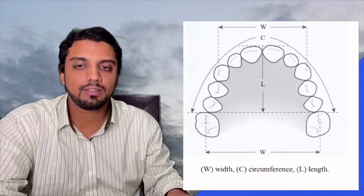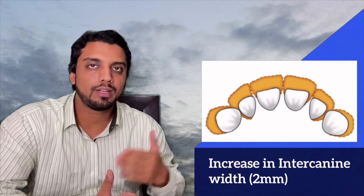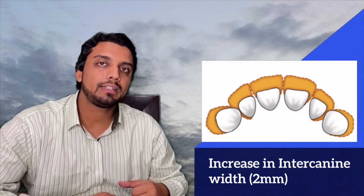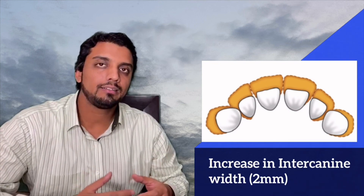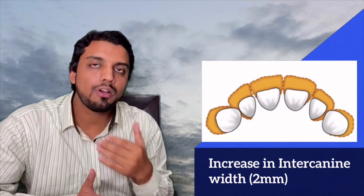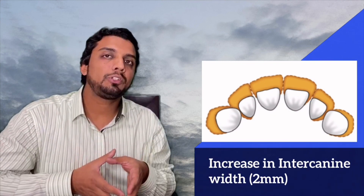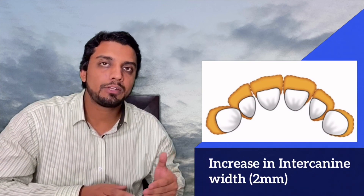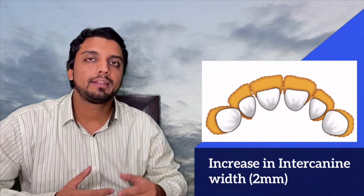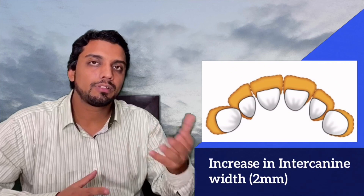The increase in the intercanine width — measured from the tip of the canine on one side to the other — also provides space for the adjustment of the permanent incisors. The intercanine width increases for two reasons: first, by transverse skeletal growth as the jaw expands transversely; and second, by the labial or buccal eruption of the permanent canine, whose position is slightly more labial and buccal compared to the primary canine. Together, these provide approximately two millimeters of extra space.